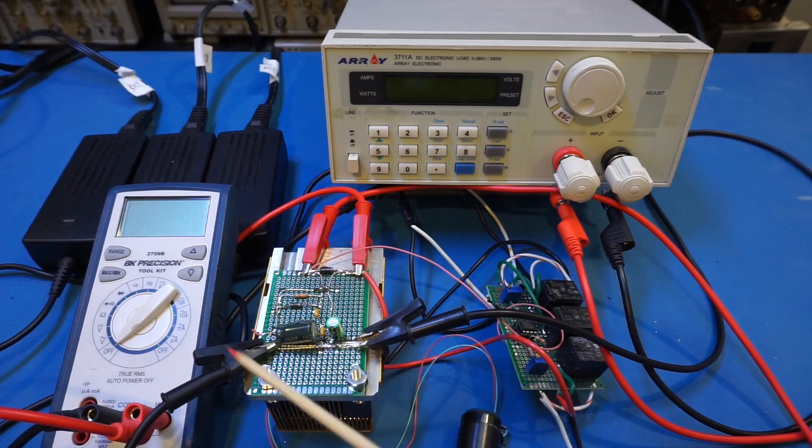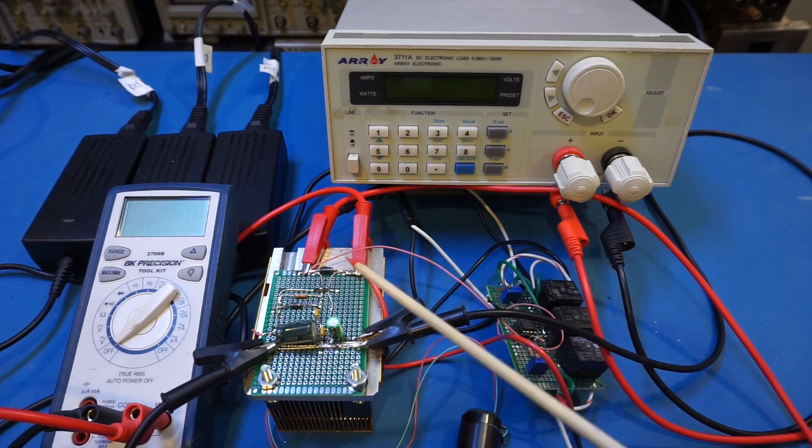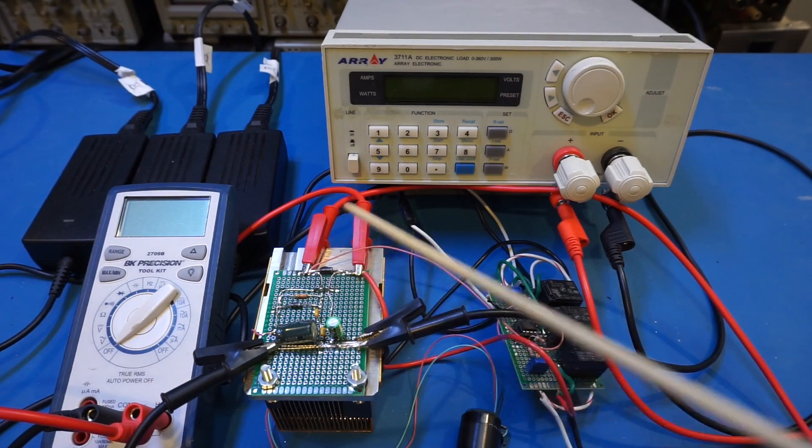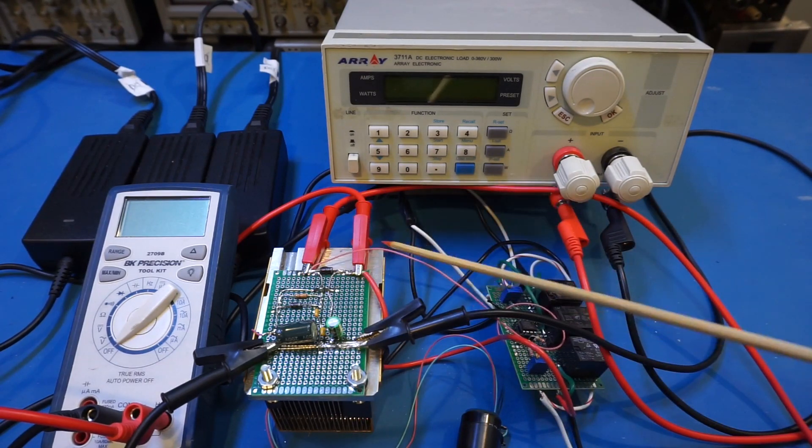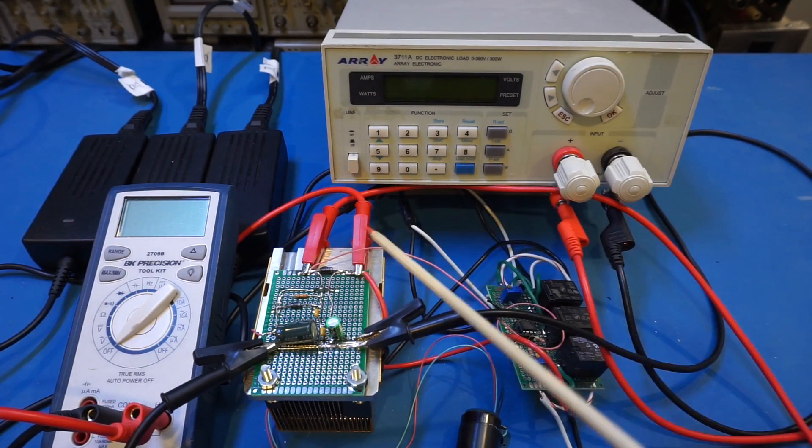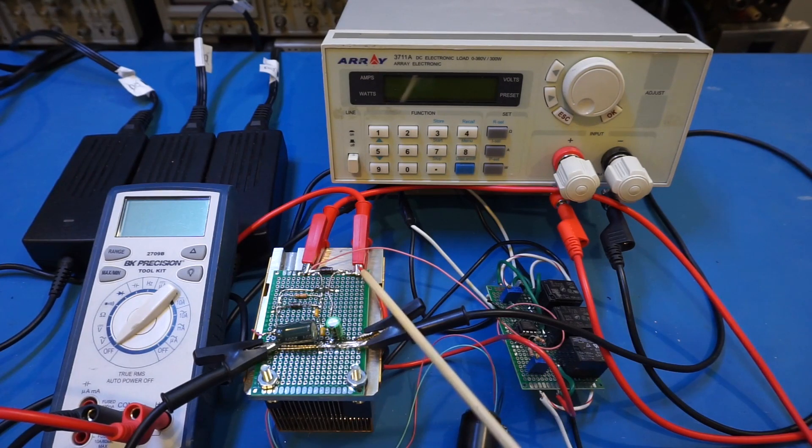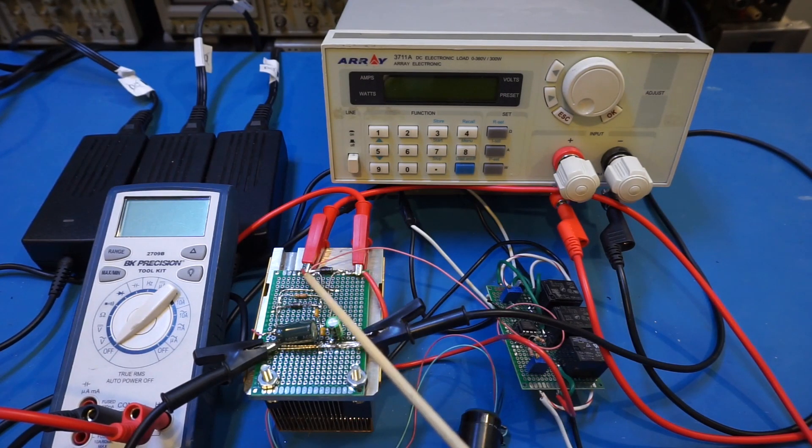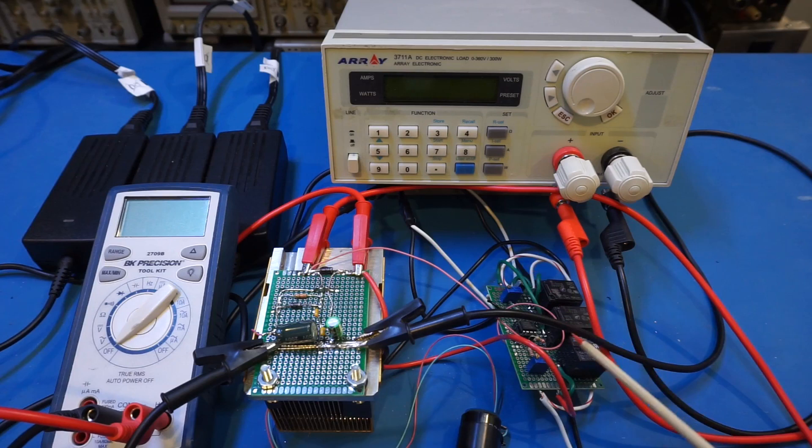And on this side, this board is the linear regulator board with the LM338 mounted underneath on top of that large heatsink. And you can probably tell by the layout of this board that this side is the input. And here is the output and this white wire is the voltage measurement wire that goes into the comparator board.